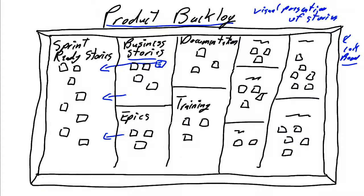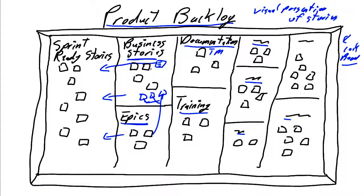It's not necessary to categorize your stories by epics. Epics are simply very large business stories that need to be further decomposed — one epic will break down into multiple user stories. You may also have stories associated with documentation requirements like a training manual, stories for specific training needs, team stories, or stories associated with technical debt. How you categorize your stories is going to be based on the type and nature of the project you're working on.